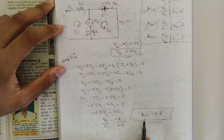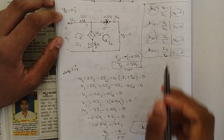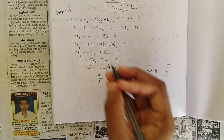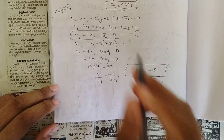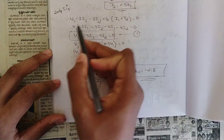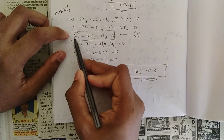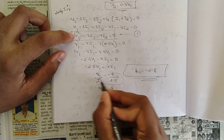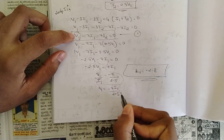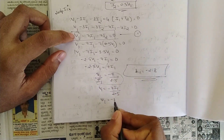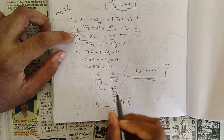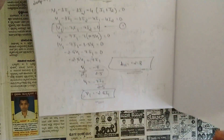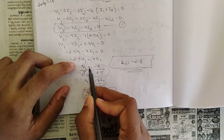Now we solve for h21 using the same condition v2=0. For h21 we need a relation between i2 and i1. Call the earlier KVL result Equation 1. The term v1 is obstructing a direct i1–i2 relation, so we express v1 in terms of i1 using Equation 1: rearranging gives v1 = (minus 7 / 2.5)·i1 = minus 2.8·i1.